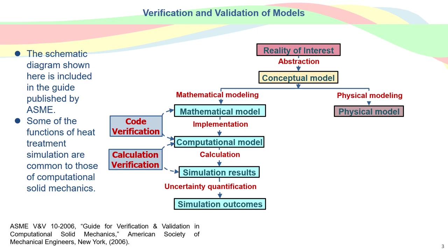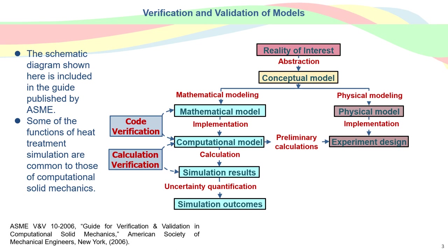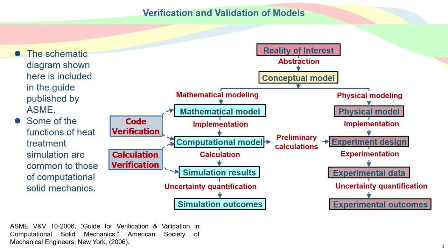Then, the set problem is simulated using the computational model for the result while the calculation is verified. Simulation outcomes are obtained by quantifying the uncertainty of the simulation result. On the other hand, the experiment for validation is designed using the physical model and also preliminary calculations by the computational model. This experiment obtains experimental outcomes after quantifying the uncertainty due to various factors by repeating the experiment.